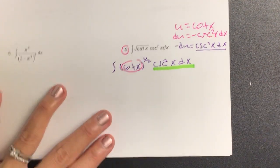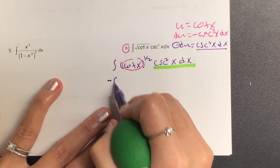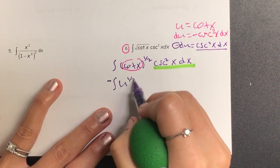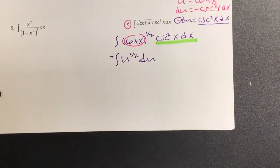So if I were to use my u substitution, I'm going to bring this outside. So we have negative integral of u to the one half du. And let's do our normal integration.